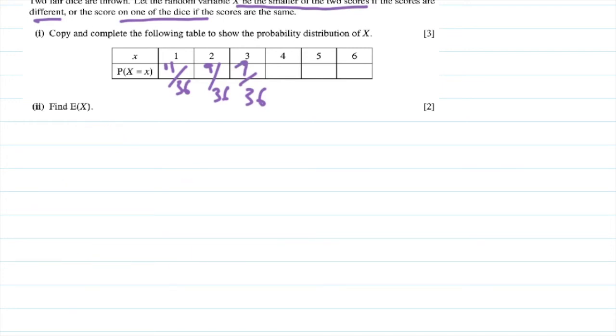Next, the lowest score is four. So four-four, then four-five, five-four, four-six, six-four. We only have five out of thirty-six.